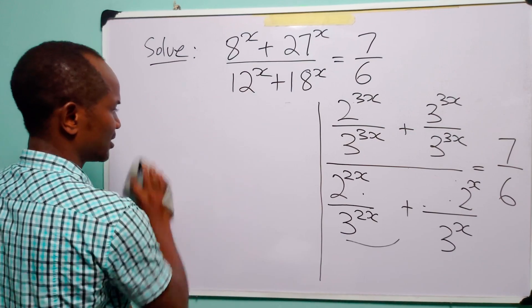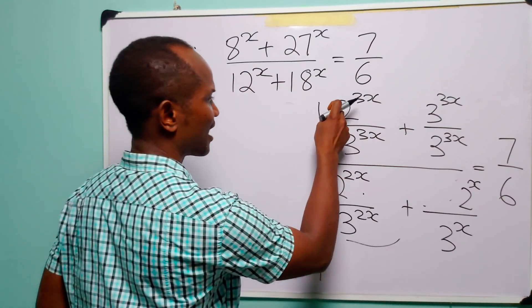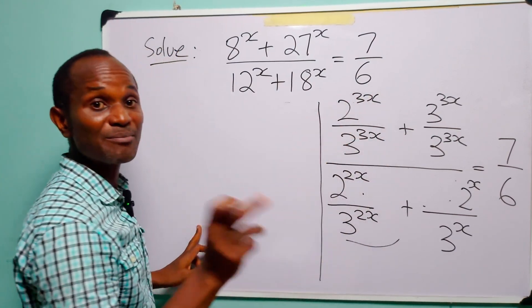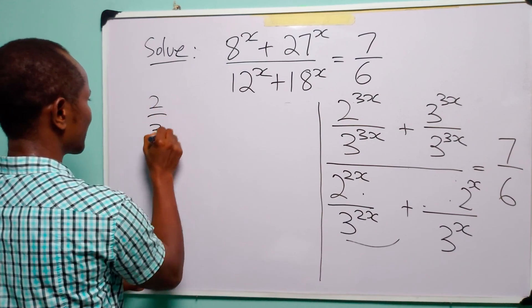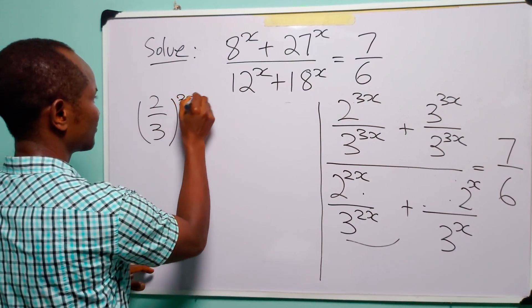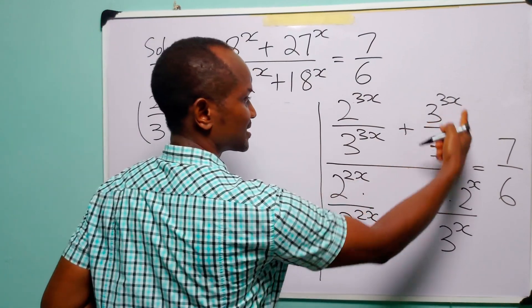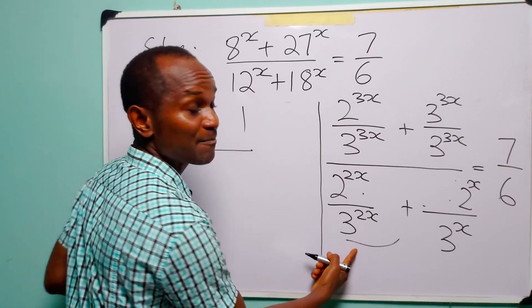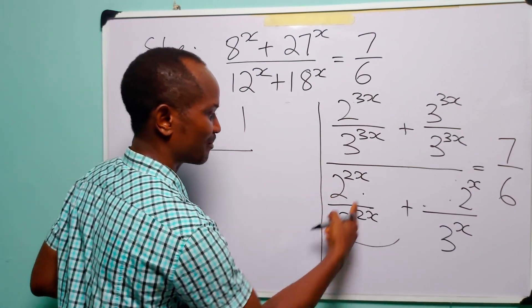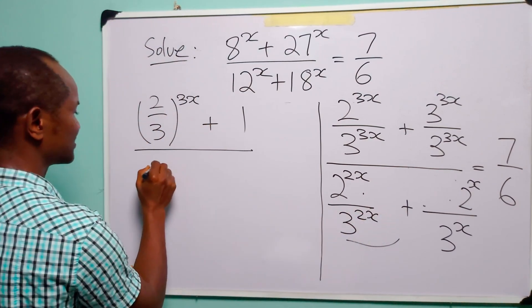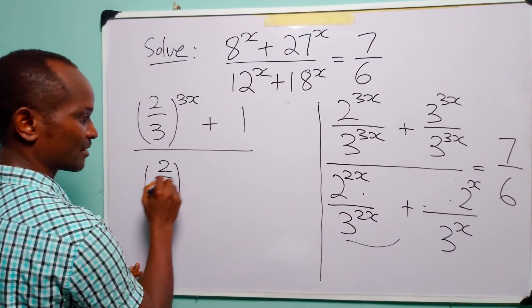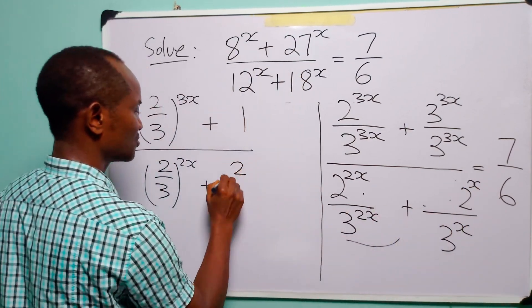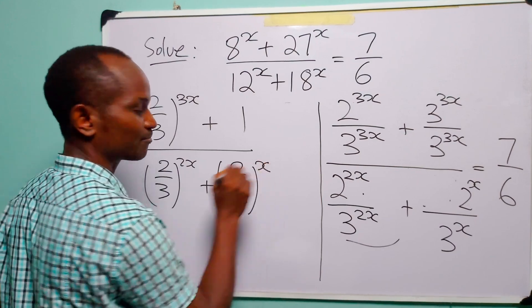Now when you look at the resulting equation, you will see that here we have 2 to the power 3x and 3 to the power 3x. Because the two numbers have the same exponent, we can write them as 2 over 3 to the power 3x, plus 1. Similarly, we can write 2 to the power 2x over 3 to the power 2x as 2 over 3 to the power 2x, plus 2 over 3 to the power x.